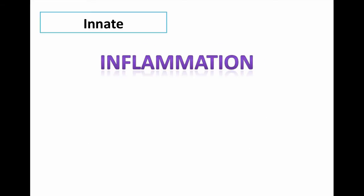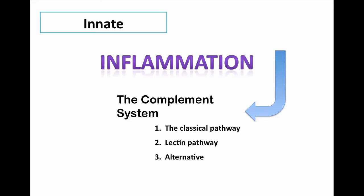A term you will often hear associated with inflammation is the complement system. The complement system has three different pathways, the classical pathway, the lectin pathway, and the alternative pathway. I'll start by explaining the classical pathway.